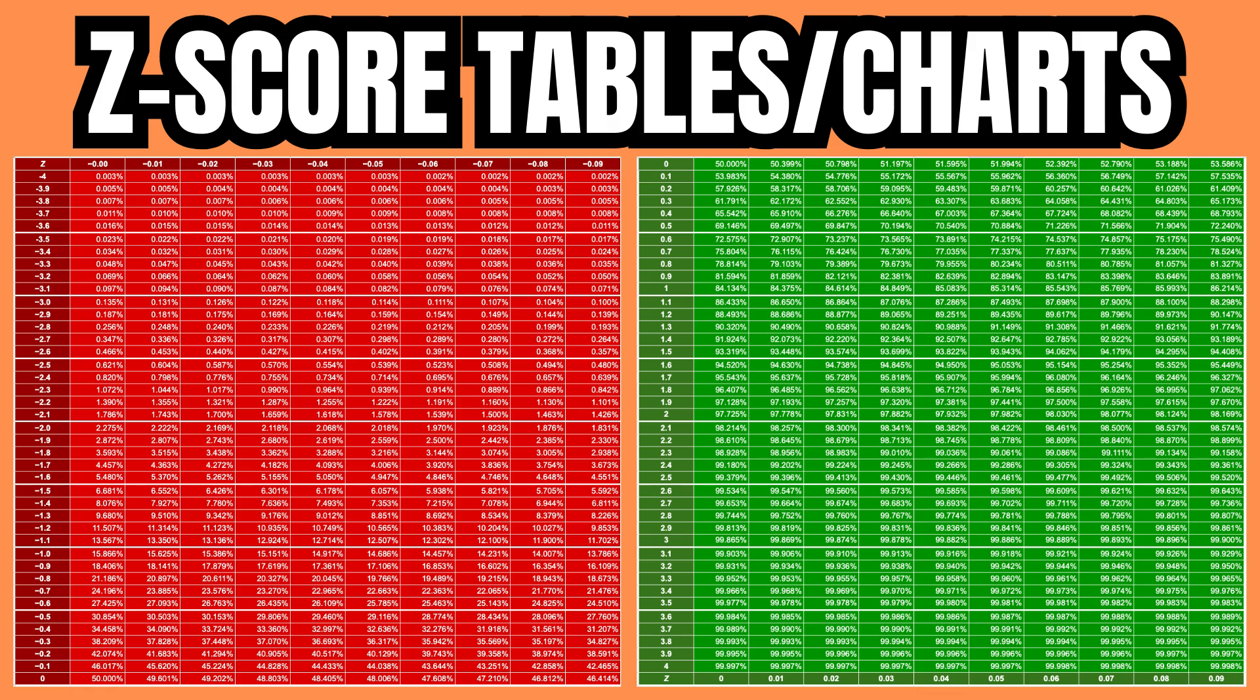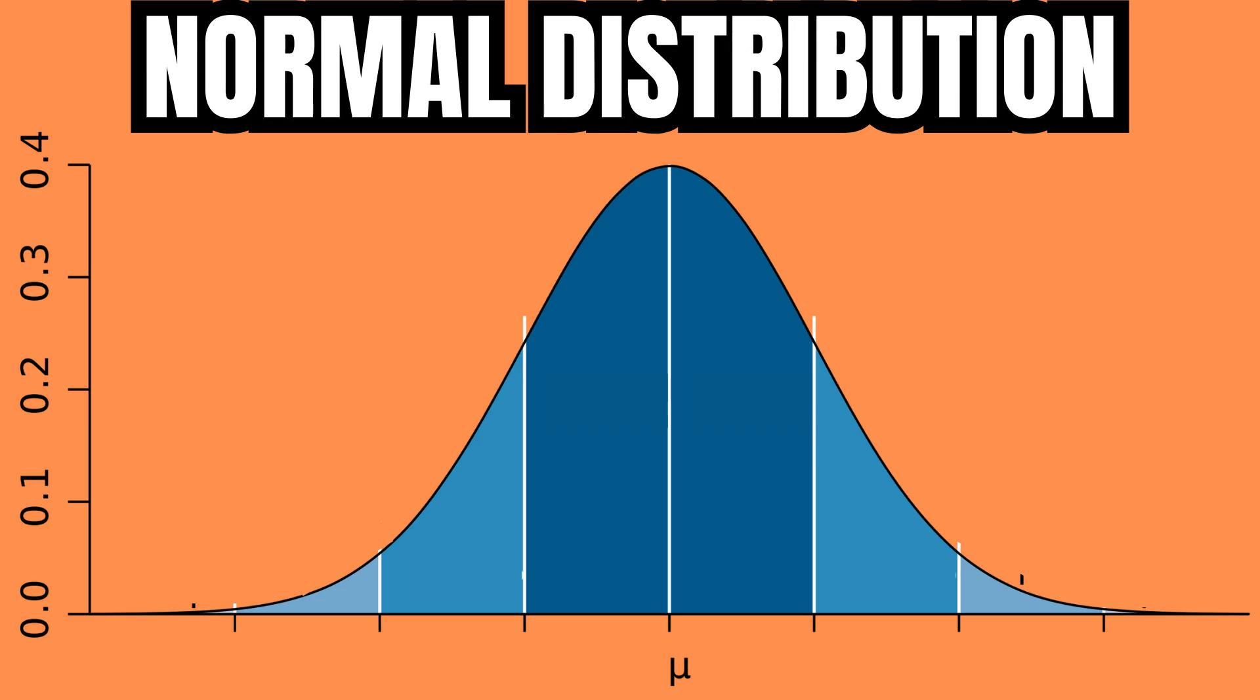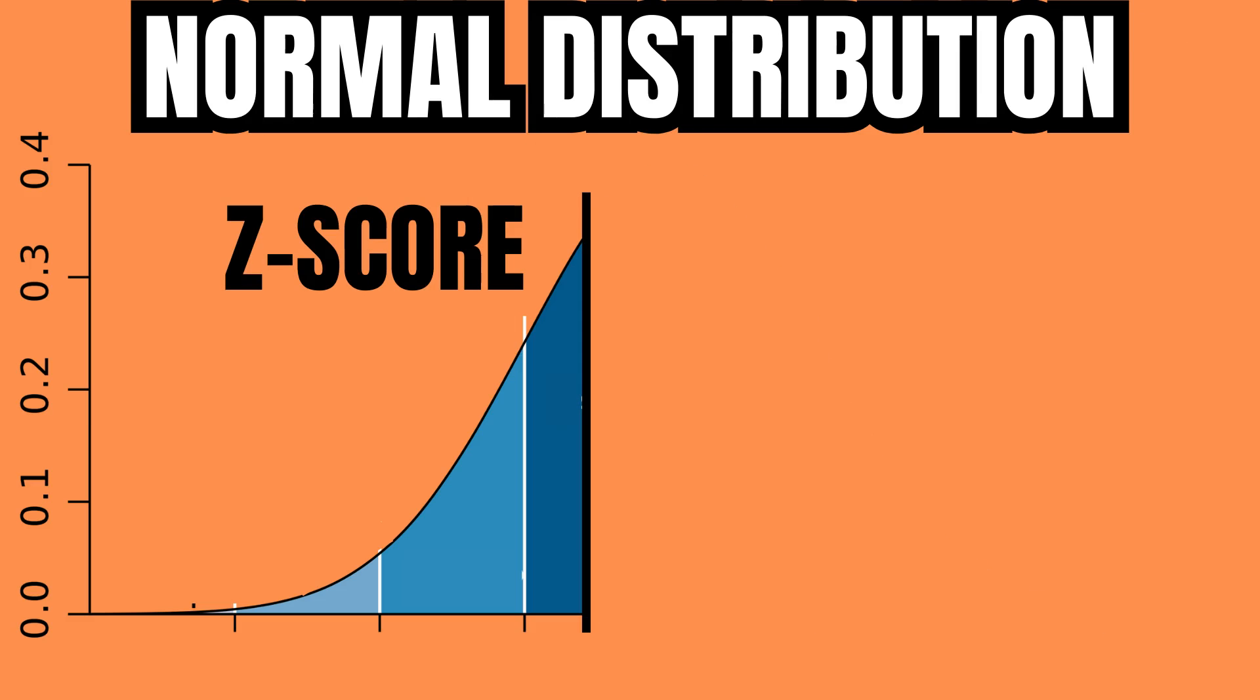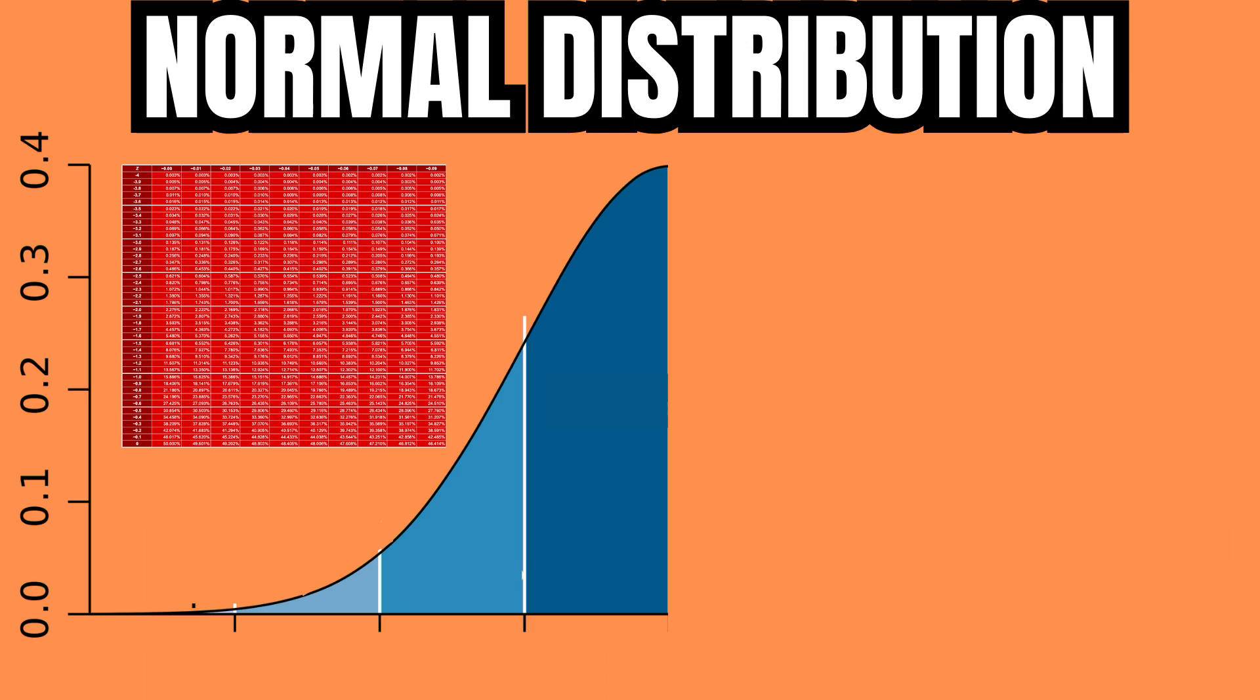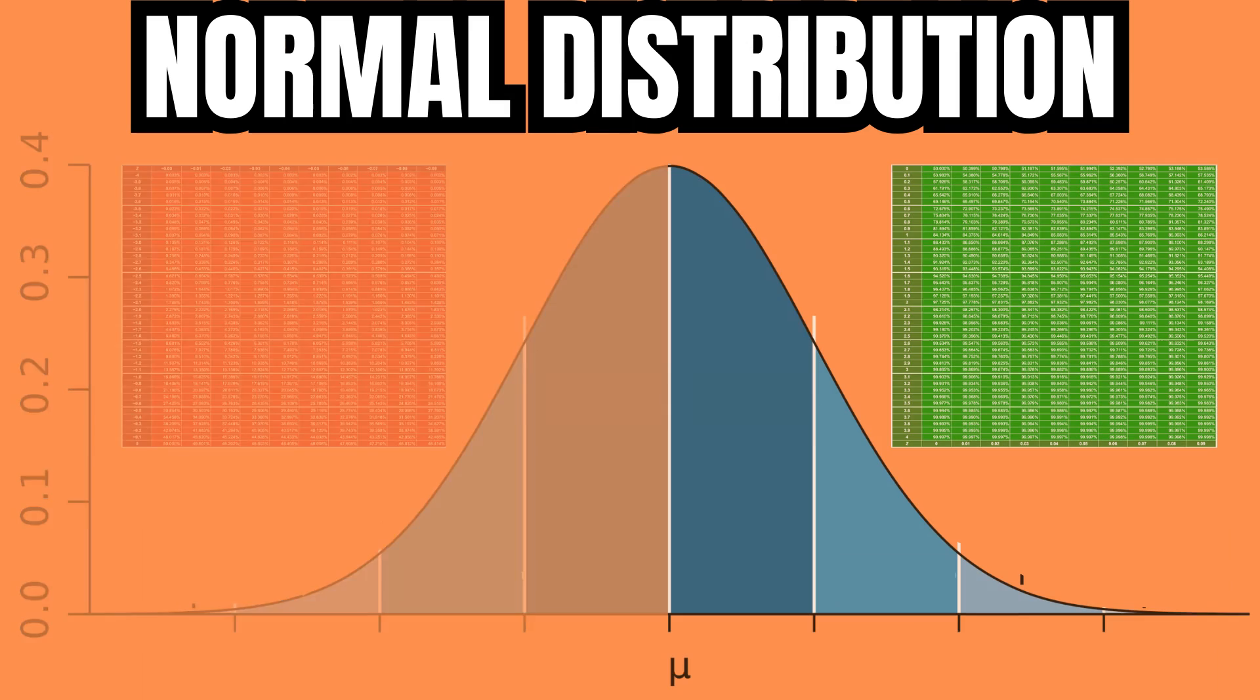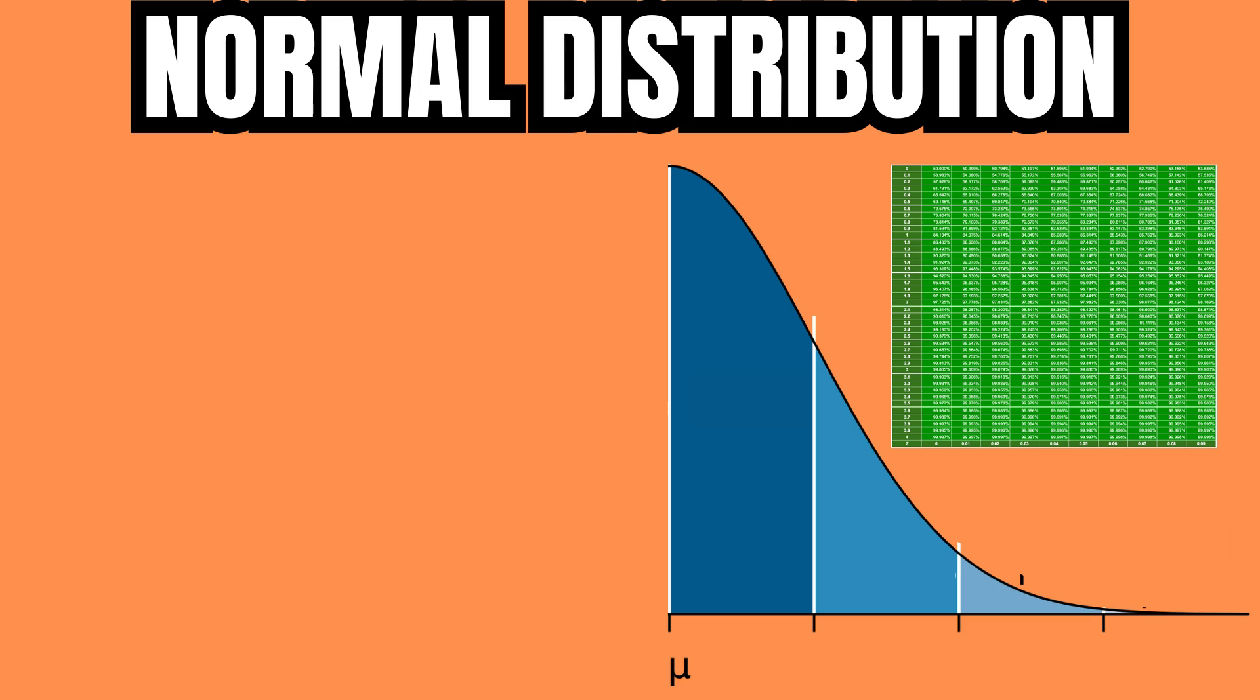Then a z-score table is used to convert the z-score into probabilities. A z-score table shows the area under the curve to the left of the z-score, or in other words, the probability that an event is less than or equal to the z-score. The red part of the z-score table shows the area below the mean and the green part shows the area above the mean.